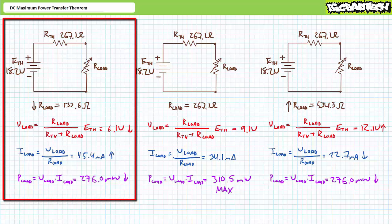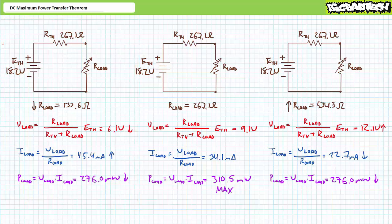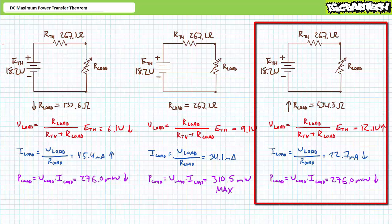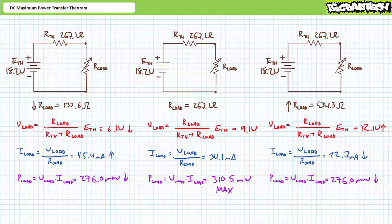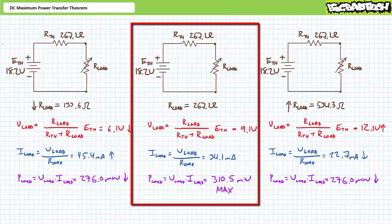When our load is less than R-TH, it experiences less voltage, more current, and less power. Similarly, when our load is greater than R-TH, it experiences greater voltage, less current, and less power. At maximum power conditions, our load is at a point where two interrelated values — voltage and current — form a maximum power product.